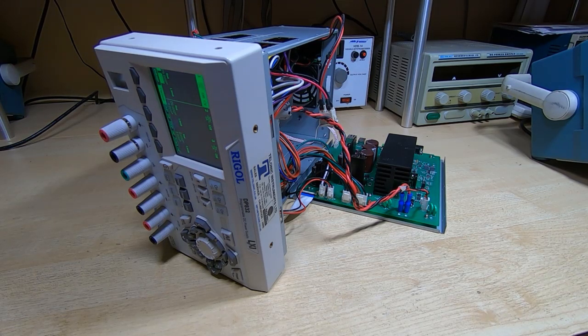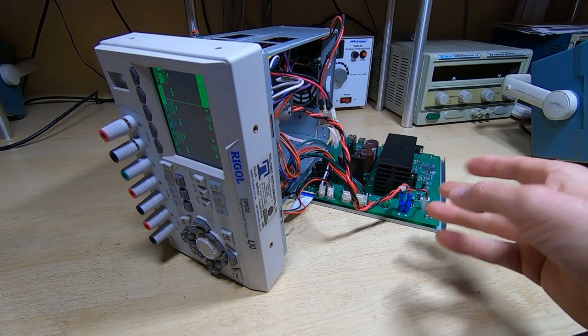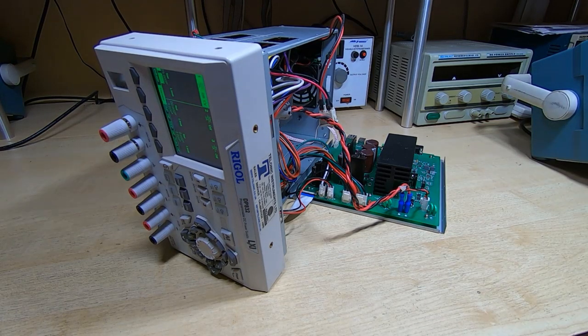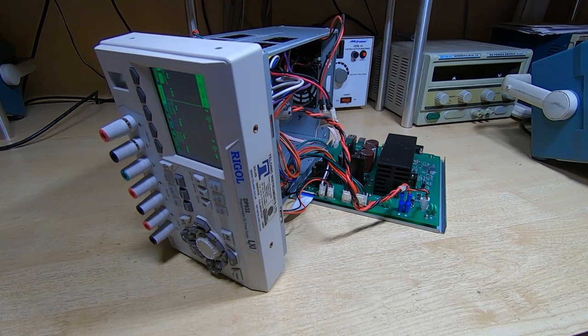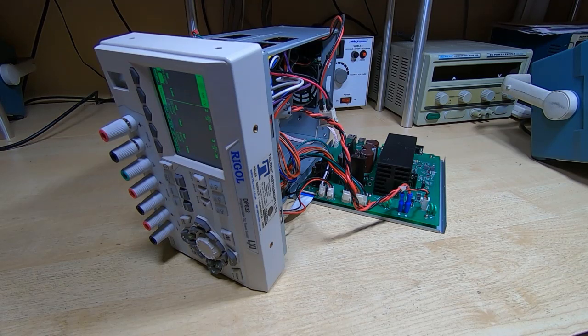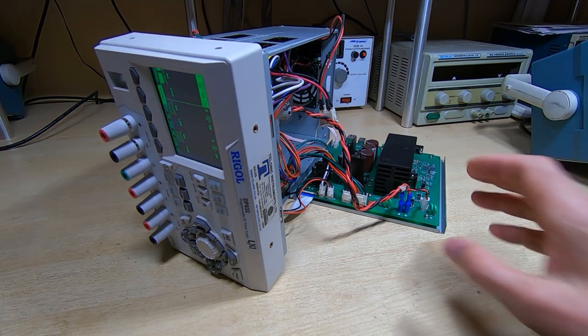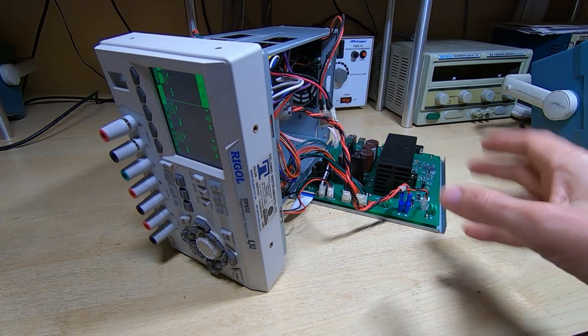Dave Jones over at EEVblog did a teardown of one of these quite a few years ago now, in fact about the same time as I bought this, which is actually about six years ago now, seven years ago, it's older than I thought it was. He found that there was a five volt regulator that was getting extremely hot, and I found the same thing in this one, and it was getting close to the thermal shutdown temperature of that particular device.